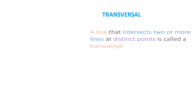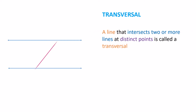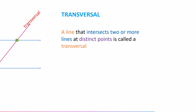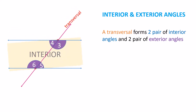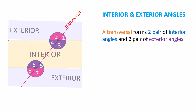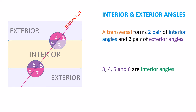Transversals: A line that intersects two or more lines at distinct points is called a transversal. A transversal forms two pairs of interior angles and two pairs of exterior angles. In this example, angles 3, 4, 5, and 6 are interior angles.